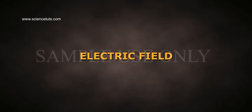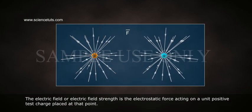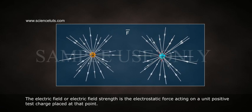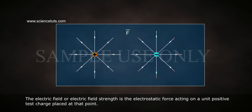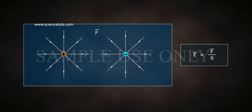Electric Field. The electric field or electric field strength is the electrostatic force acting on a unit positive test charge placed at that point. If F bar is the electrostatic force experienced by a test charge Q at a point, then the electric field intensity at that point is given by E bar is equal to F bar by Q.